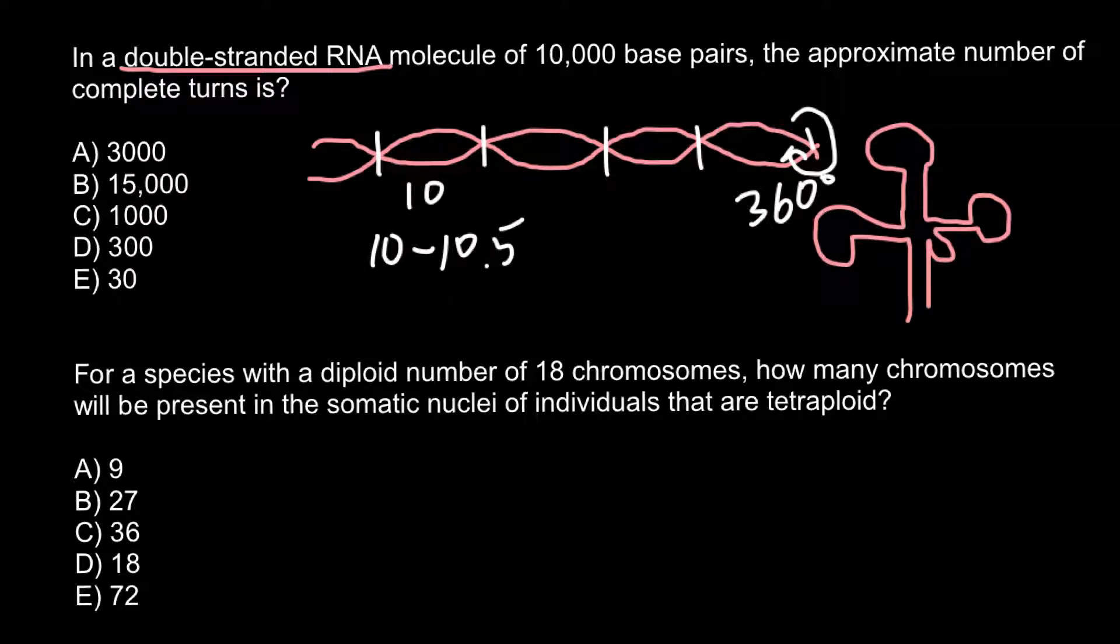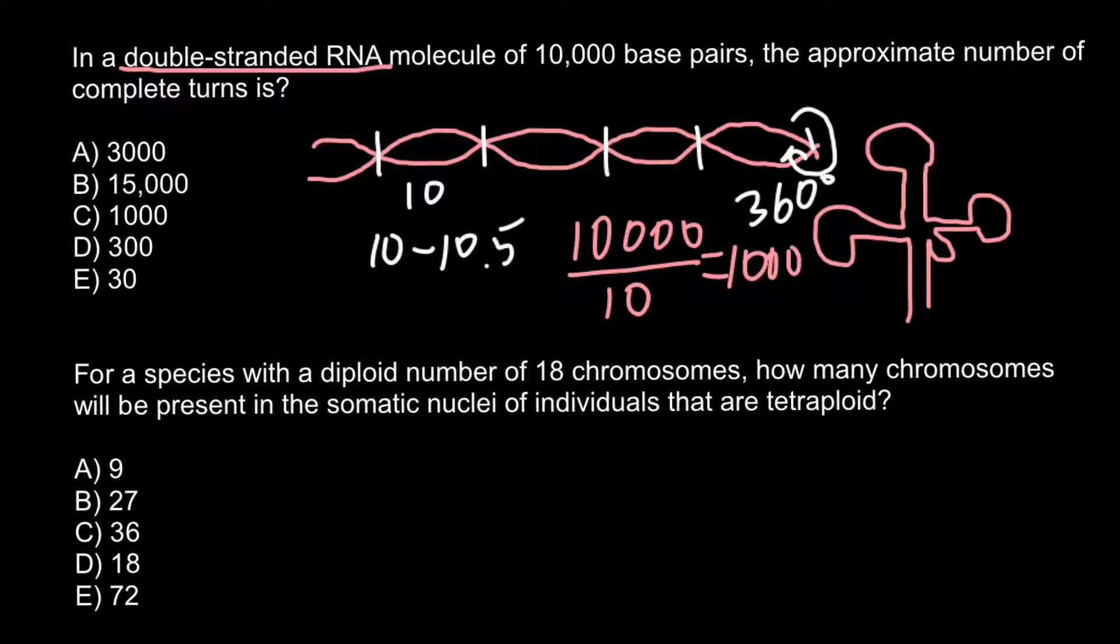In literature you may find information that it's between ten and ten point five bases. Because all the answers are rounded numbers, we can suggest that this problem assumes that one 360 degree turn is made by every ten base pairs. So basically we have to divide ten thousand by ten, and our answer would be one thousand. This is answer C. In such a fragment that consists of ten thousand base pairs, we should expect that double stranded RNA would make one thousand turns.